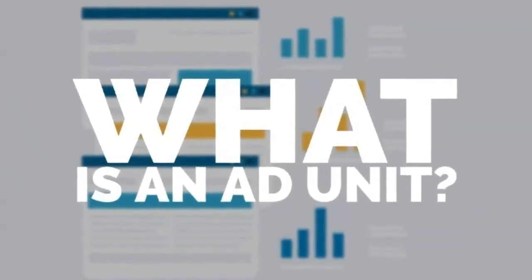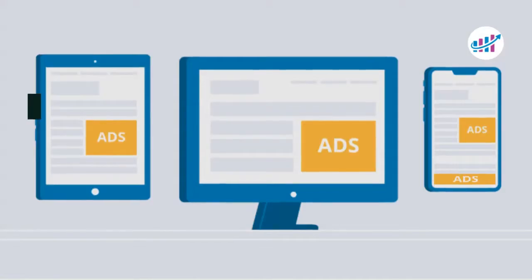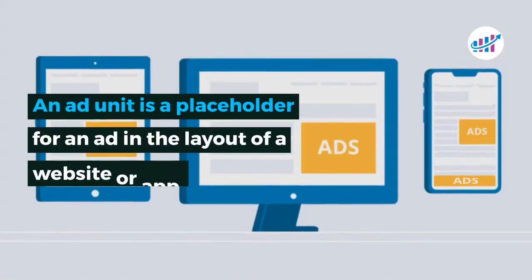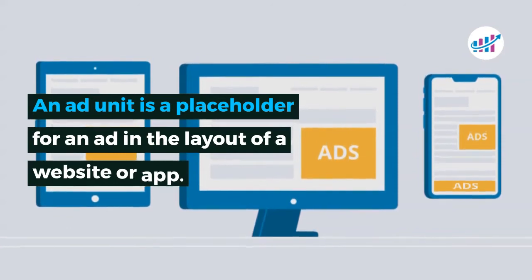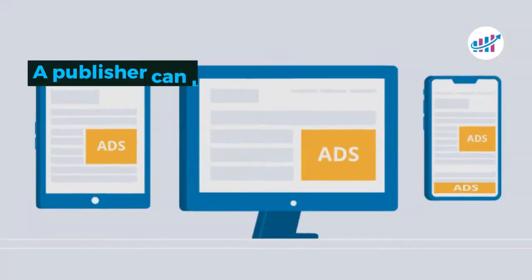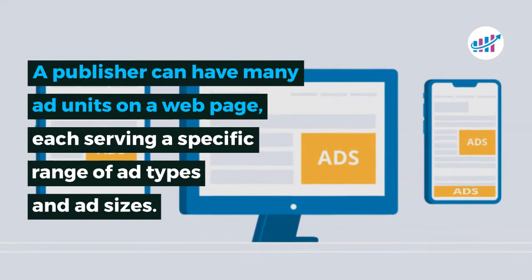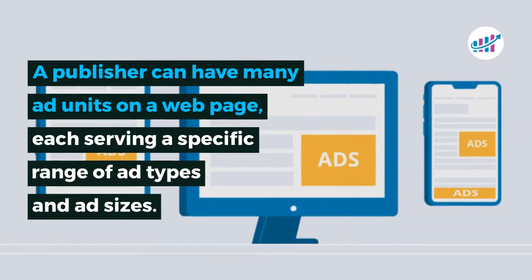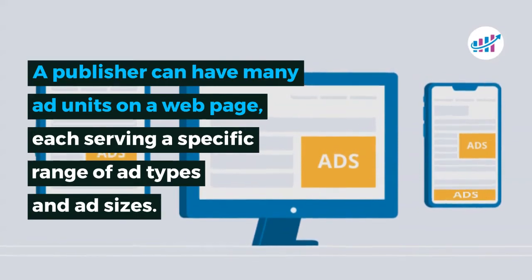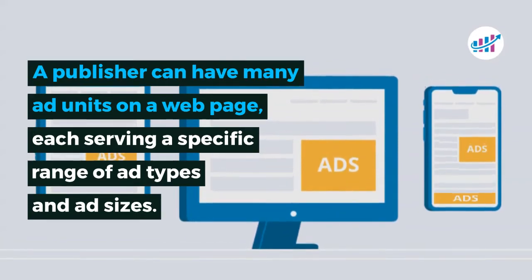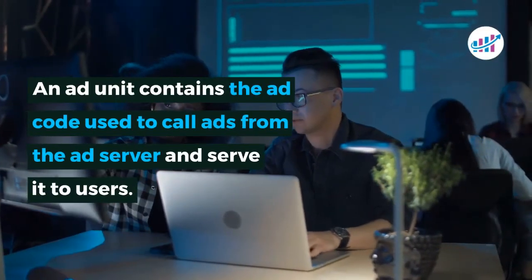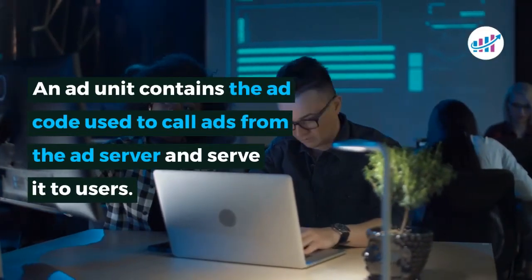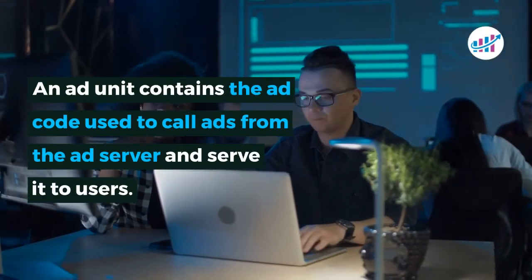What is an ad unit? An ad unit is a placeholder for an ad in the layout of a website or app. A publisher can have many ad units on a web page, each serving a specific range of ad types and ad sizes. An ad unit contains the ad code used to call ads from the ad server and serve it to users.